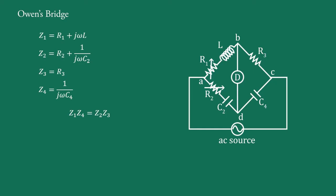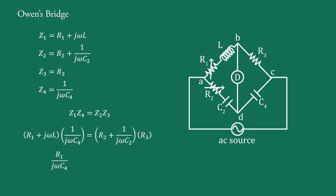Using the bridge balance condition Z1·Z4 equals Z2·Z3: that is, R1 plus j-omega-L, multiplied by 1 upon j-omega-C4, equals R2 plus 1 upon j-omega-C2, multiplied by R3. Expanding the brackets on both sides we have R1 upon j-omega-C4, plus L upon C4, equal to R2·R3 plus R3 upon j-omega-C2.